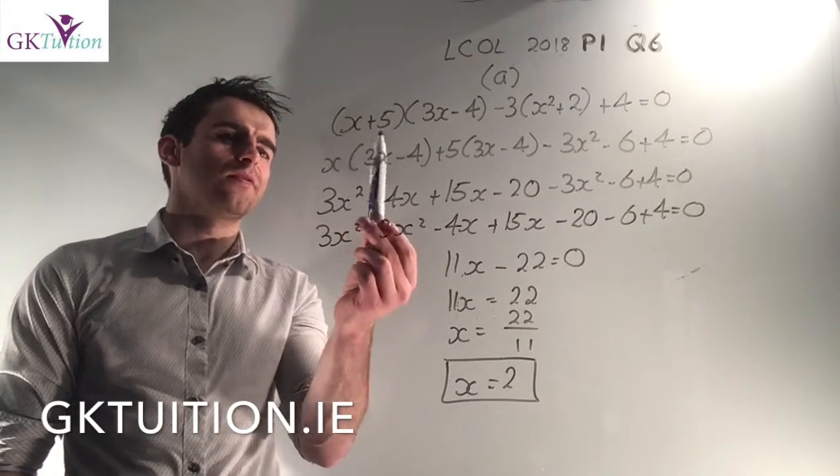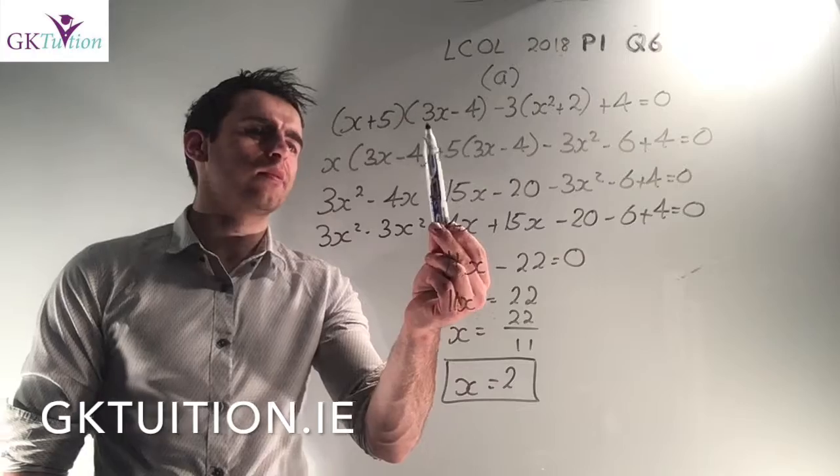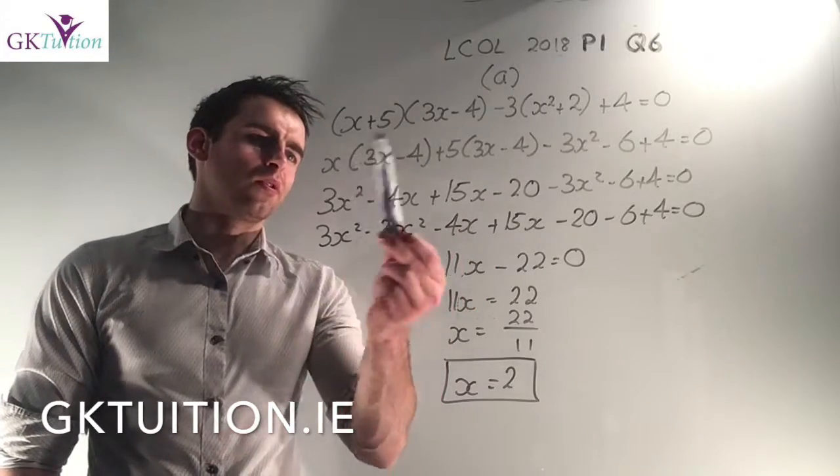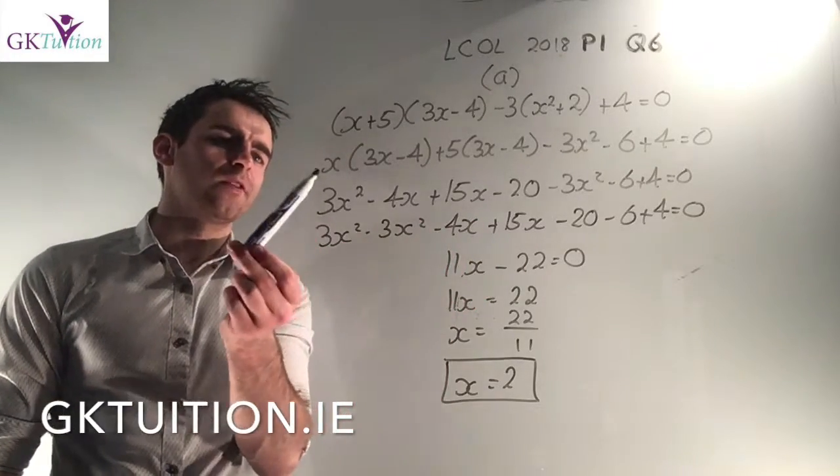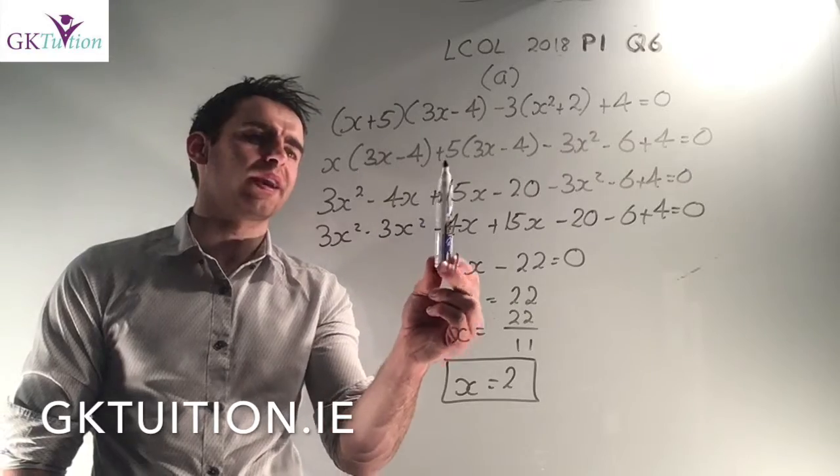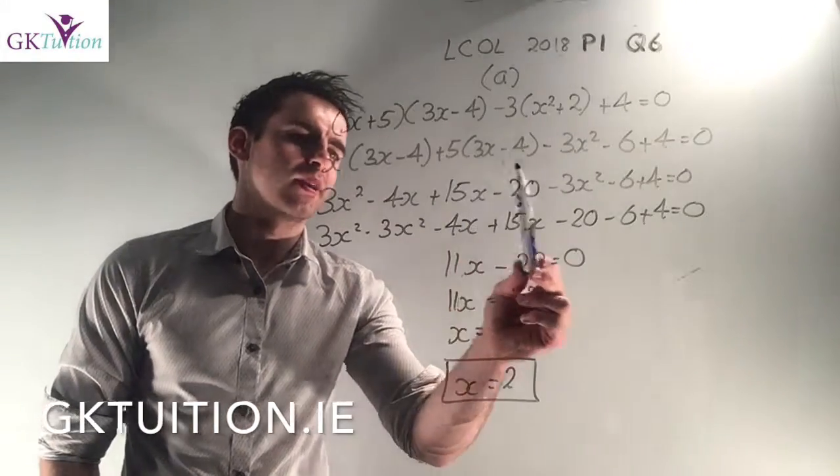So you have a number of complications here. The first problem is that you have (x+5) times (3x-4). So in order to multiply double brackets, it's the first thing in the first bracket by the second bracket, then the second thing in the first bracket by the second bracket.